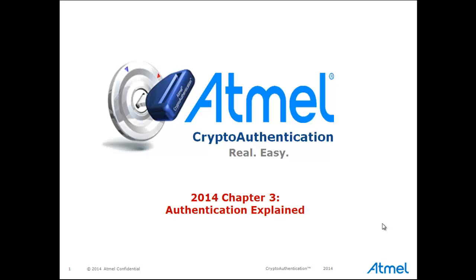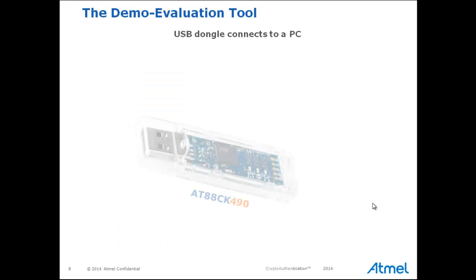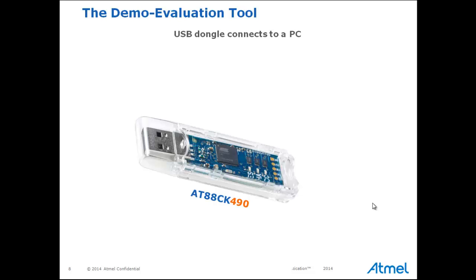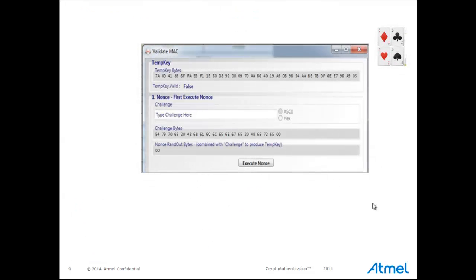We will cover how to demonstrate symmetric authentication on the AT88SA204A using Atmel's Demo Kit software. The Demo Evaluation Kit allows the user to use ACES software on a PC to configure and evaluate the operation of crypto authentication devices. The dongle is available from Atmel and ACES software can be downloaded from the Atmel website. When the dongle is connected and ACES is downloaded, you can see wizards that demonstrate various operations of AT88SA204A. This is a screenshot showing one of those wizards.